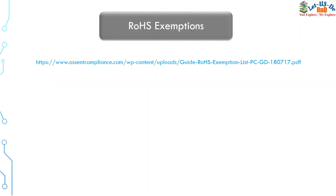There are also some RoHS exemptions which are applicable and provided to certain industries — specifically for military and space exploration programs and for medical equipment. There cannot be any compromise on the performance of military and space components. A link is provided where you can read about all the RoHS exemptions. Let me know if you have any questions, or if you want a new video specifically addressing RoHS exemptions.